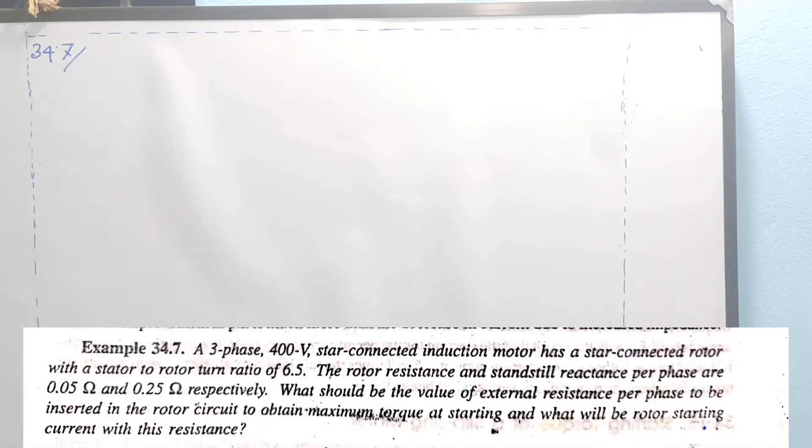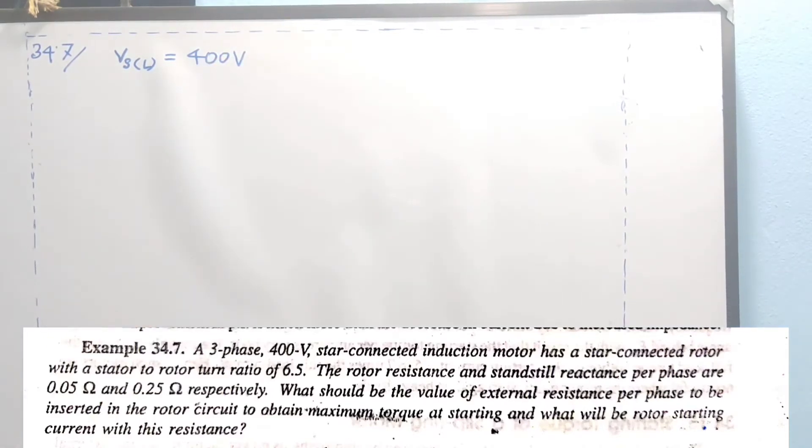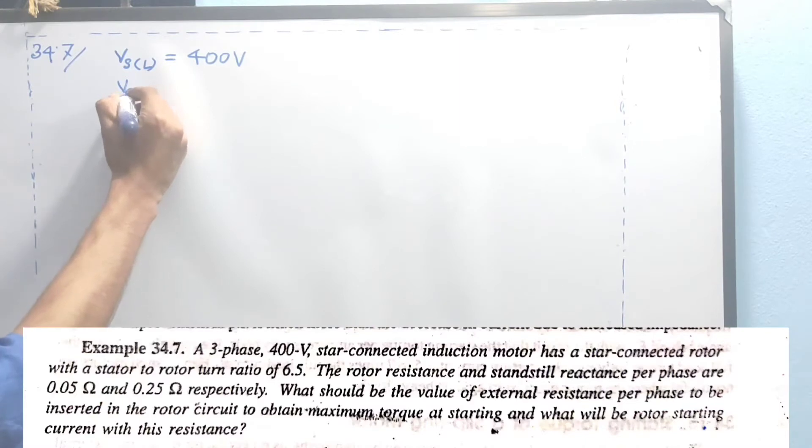So, the main thing is the transformation ratio. The stator to rotor turn ratio is 6.5. The transformation ratio is the main thing in the calculation. This transformation ratio relates the line voltage on the primary and secondary sides.